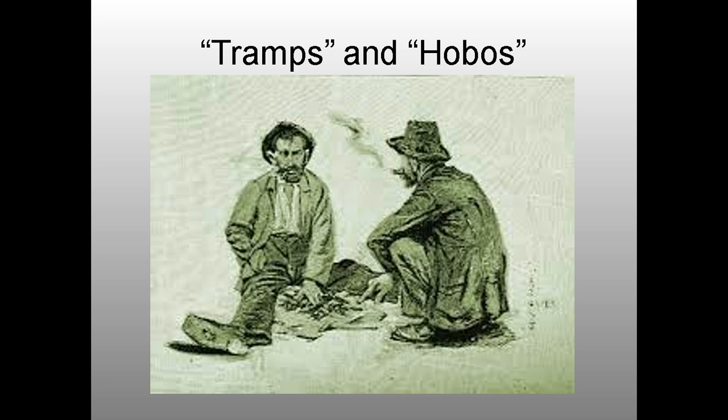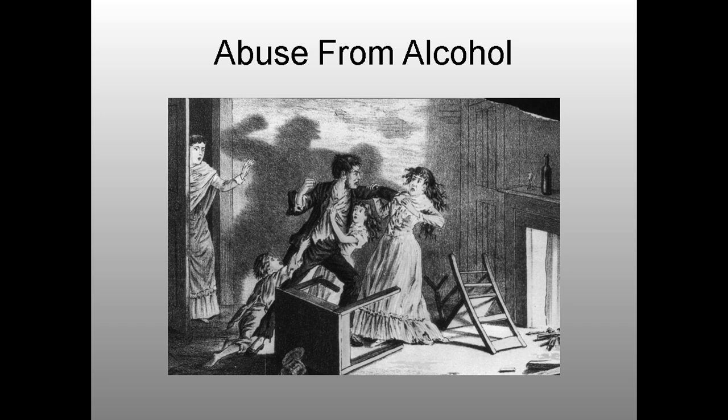Tramp or hobo became a commonplace description for rootless men who walked the highways or illegally rode the railroads looking for opportunity. And like today, people living lives of despair with no hope turned to alcohol to cope with their miserable lives. There were huge numbers of alcoholics in the 19th century, and this led to domestic violence and spousal and child abuse. Americans promote drinking as a lifestyle and romanticize it in advertising.